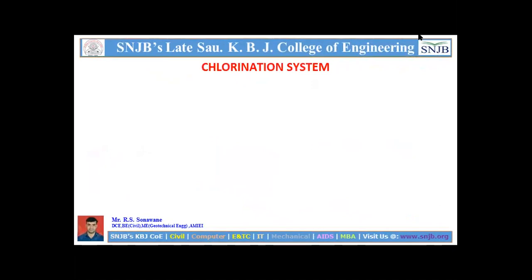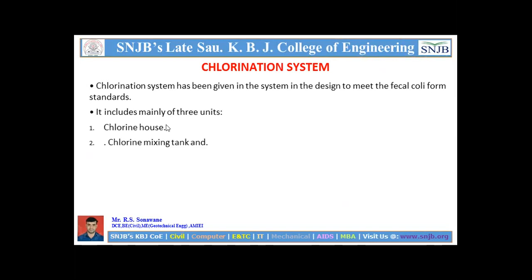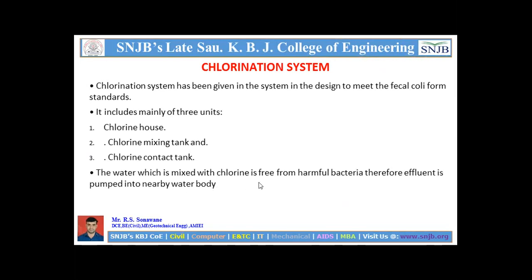To maintain the hygienic system, a chlorination system is provided to meet fecal coliform standards. It includes three units: a chlorine house, a chlorine mixing tank, and a chlorine contact tank. The water mixed with chlorine is freed from harmful bacteria, after which the effluent is pumped into nearby water bodies.